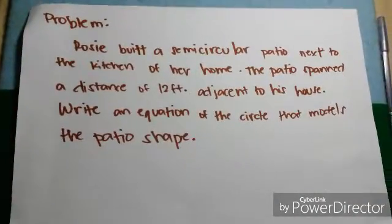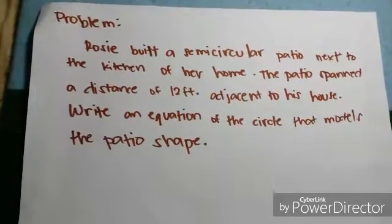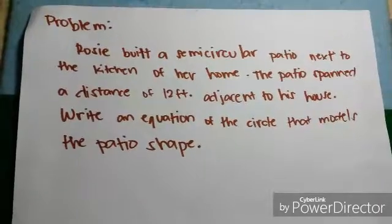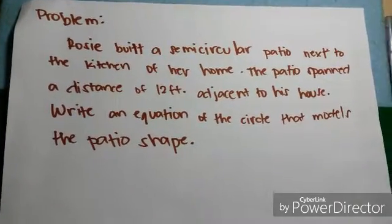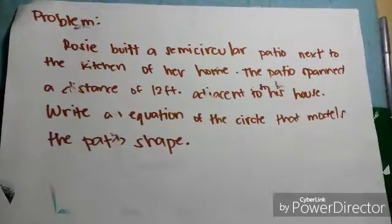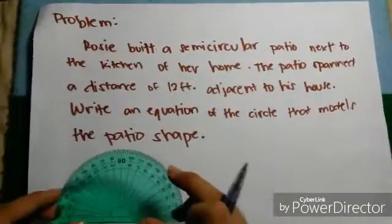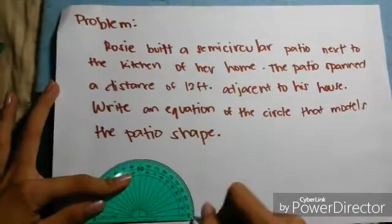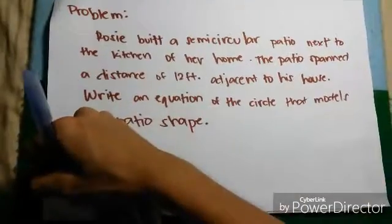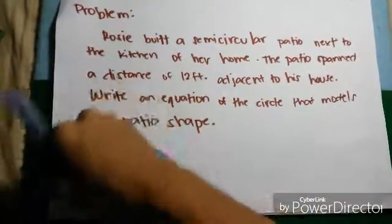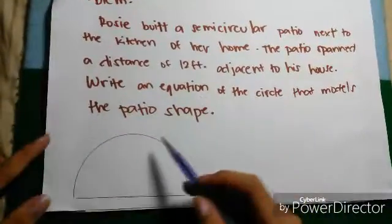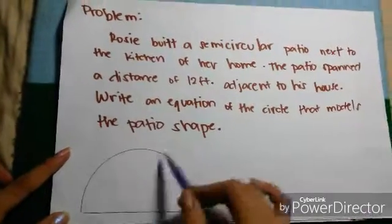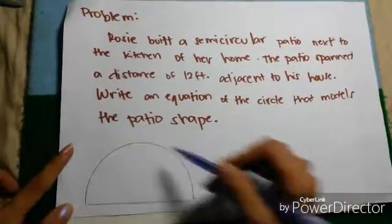Our last problem is Rosie built a semicircle patio next to the kitchen of her home. The patio spanned the distance of 12 feet adjacent to his house. Write an equation of the circle that models the patio shape. Let's say that this is her house, this line here, and the patio is the curved line here, or the semicircle. It says here that the distance of the patio spanned 12 feet. This whole circle right here is 12 feet.